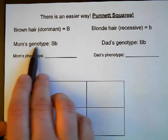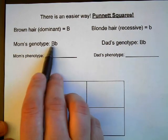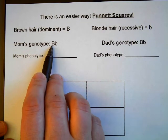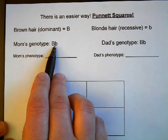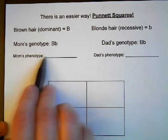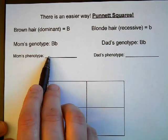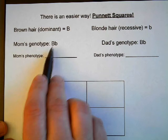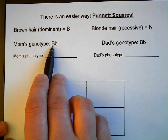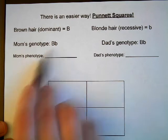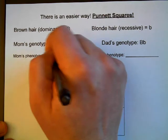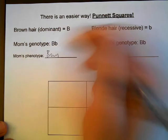Brown hair is a dominant trait and will be represented with capital letters, and blonde hair is a recessive trait represented with lowercase letters. So mom's genotype is heterozygous — one allele that codes for brown hair (dominant) and one allele that codes for blonde hair (recessive). Therefore mom's phenotype, the physical feature that you would see, would be brown hair because the dominant gene covers up the recessive allele of blonde hair.